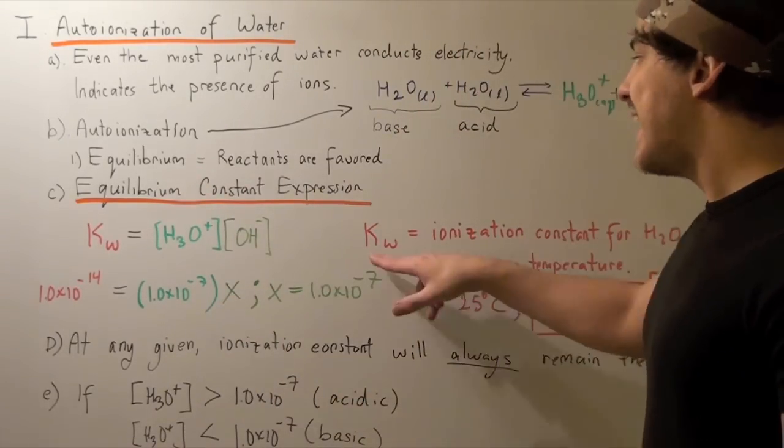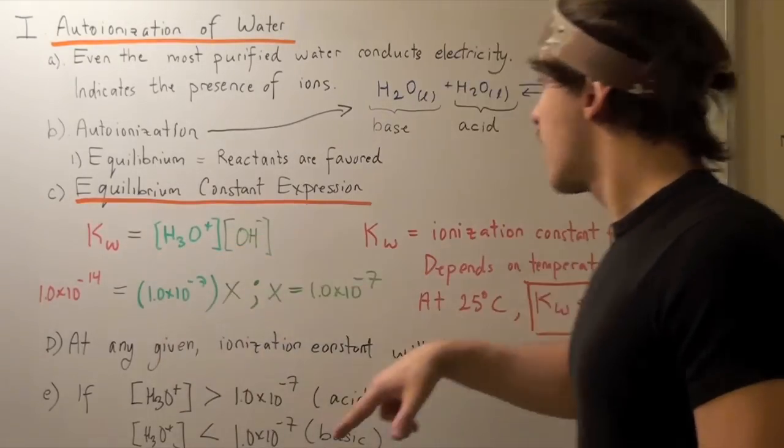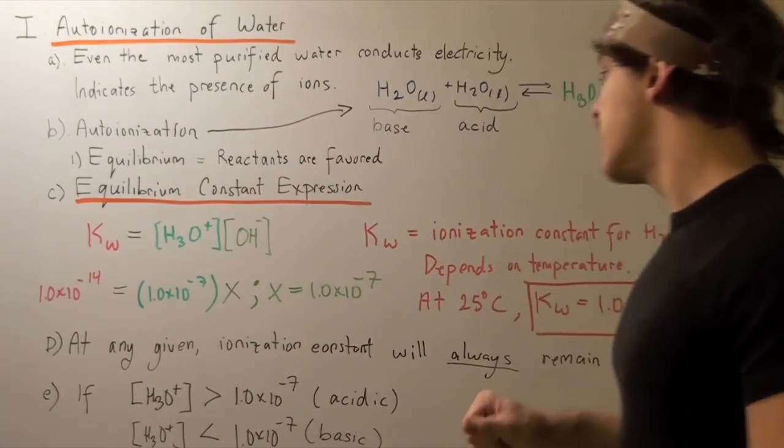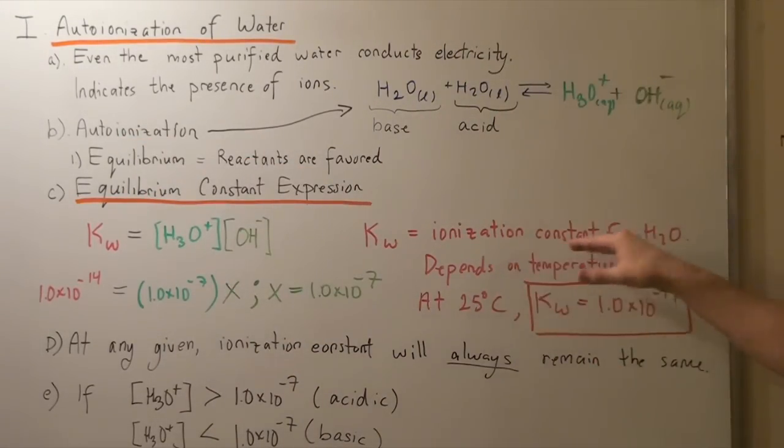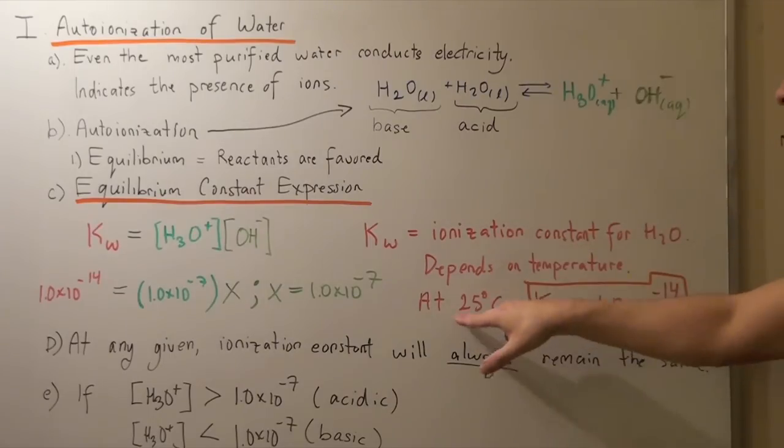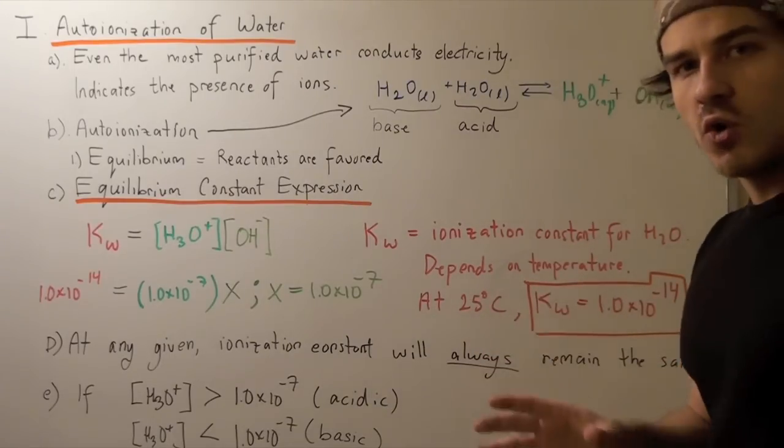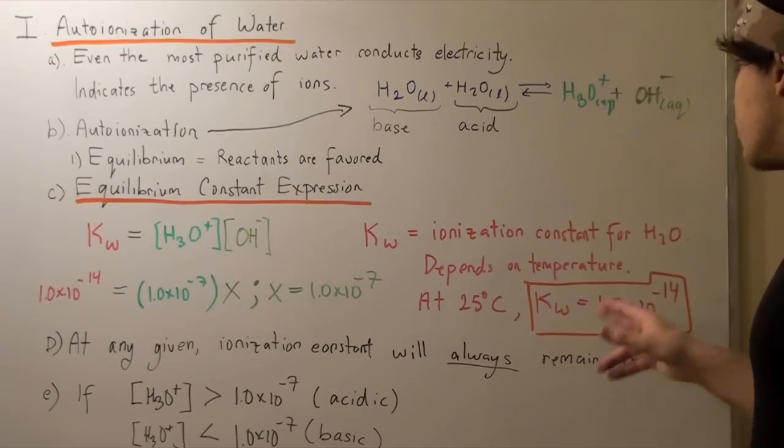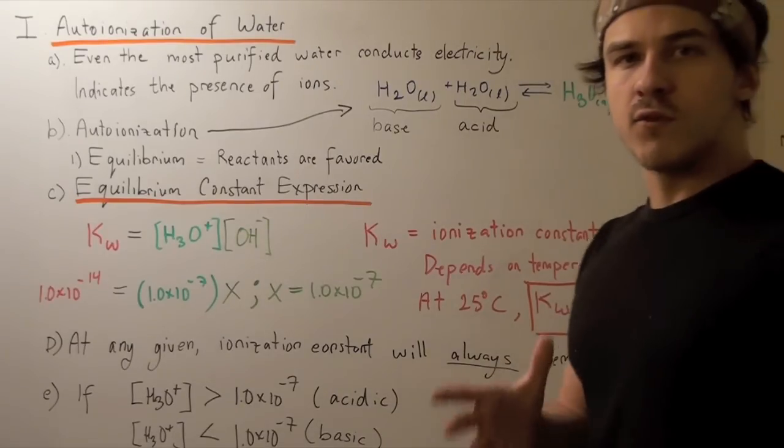Kw, in this case, when we talk about auto-ionization, is called the ionization constant for H2O. This depends on temperature. At 25 degrees Celsius, you should know that Kw is 1.0 times 10 to negative 14.